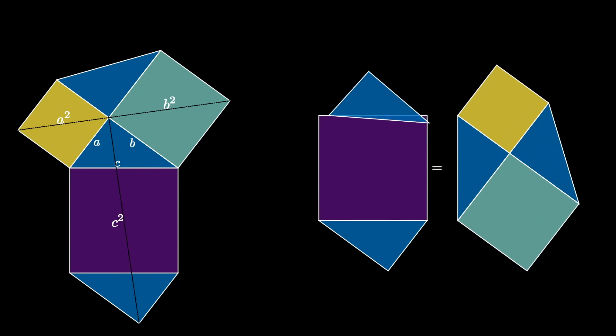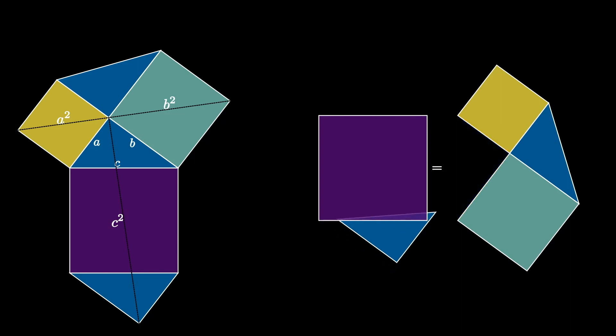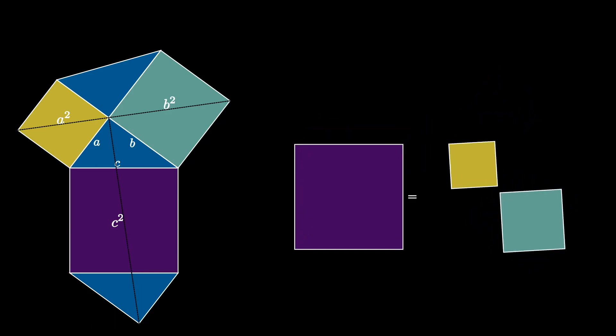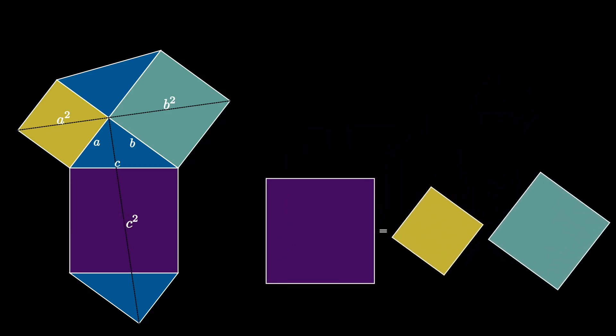But notice that both of these hexagons use two copies of the original right triangle. So removing those triangles from both diagrams shows that the large square encloses the exact same area as the two smaller squares, which means that c squared is the same as a squared plus b squared.